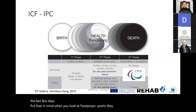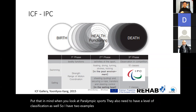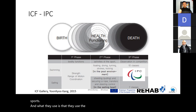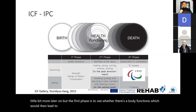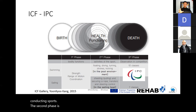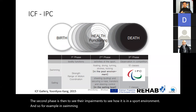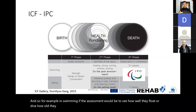Paralympic sports also need a level of classification. I have two examples: swimming and sailing sports. They use the ICF in three different phases. The first phase is to see whether there are body functions that would lead to impairments — classifiable as having impairments to the level of conducting sports. The second phase is to see those impairments in a sport environment — for example in swimming, assessing how well they float, dive, turn, stroke, and kick to determine their classification level.